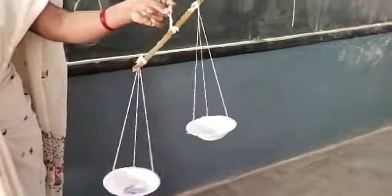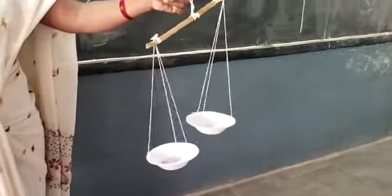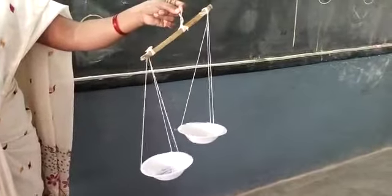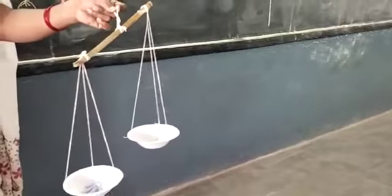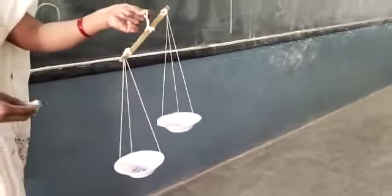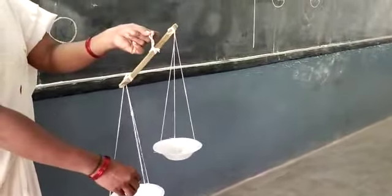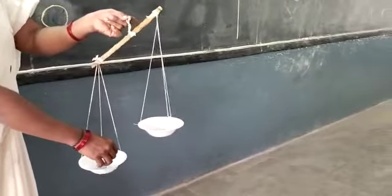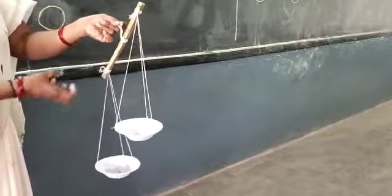Now we will put some more objects on the other side. Now it became equal. Then some more objects I am putting here — so more weight is going down on that side. So whichever side is coming down has more weight.